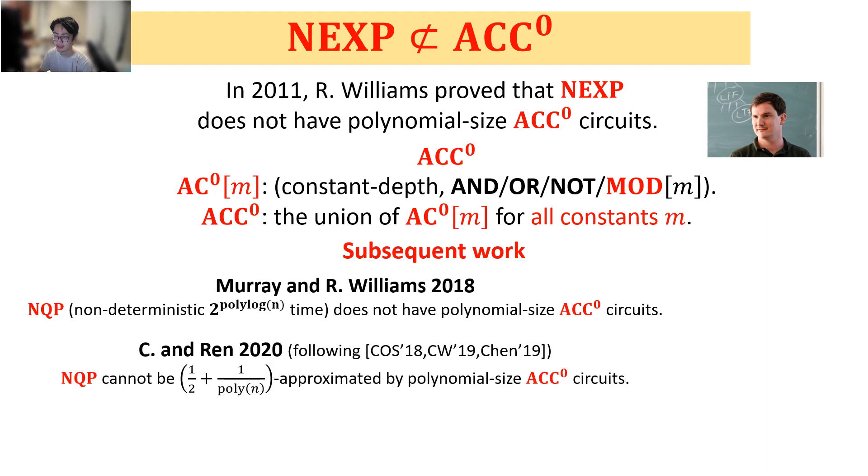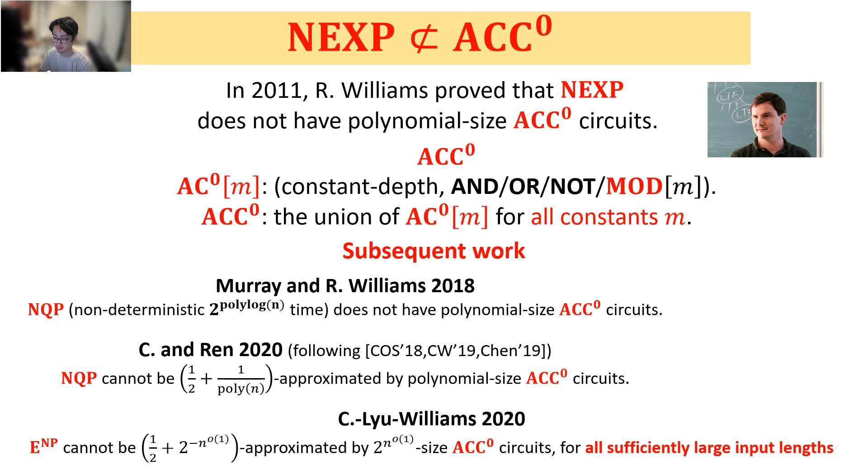Later, Chen and Ren, following previous work, proved that NQP cannot be (1/2 + 1/poly(n)) approximated by polynomial size ACC^0 circuits, thereby improving the worst-case lower bound to a strongly average-case lower bound. And Chen, Lu, and Williams proved that E^NP cannot be (1/2 + 2^{-n^{o(1)}}) approximated by 2^{n^{o(1)}} size ACC^0 circuits for sufficiently large input lengths, thereby proving the first infinitely often lower bound for E^NP. In this work, we'll give alternative proofs for the first two results and some new results.